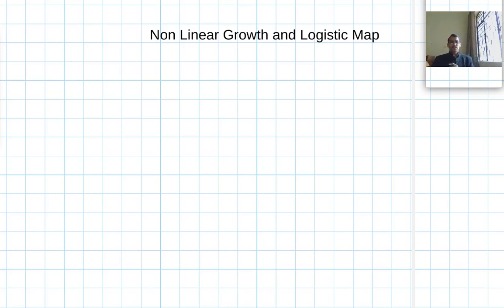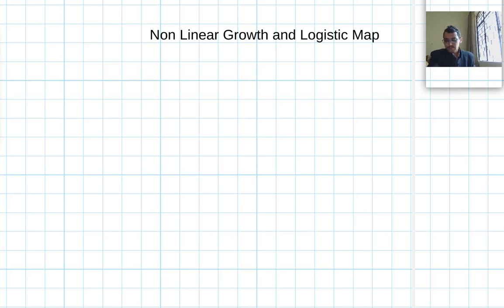Today I am going to talk about non-linear growth and the logistic map. Non-linear growth means something is growing and then its population keeps on decaying. For example, let us take the growth of population of insects — that is the best example.